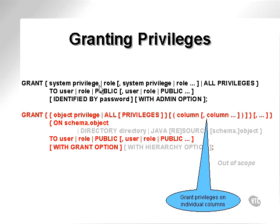The main difference between a system privilege and an object privilege is that a system privilege is granted so that you can take an action with an object — you can create an object, drop an object, change an object. The object privilege is applied to columns and tables, or entire tables.